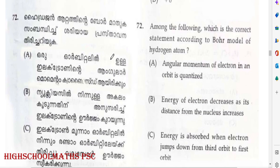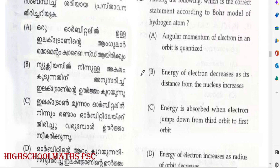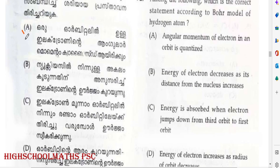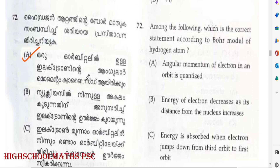Question: Which is the correct statement according to the Bohr model of the hydrogen atom? The electron in a hydrogen atom is in orbit 3. The electron orbit is the same. Answer relates to the electron moving in a fixed orbit.